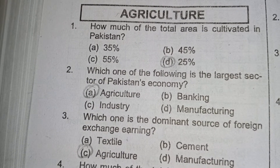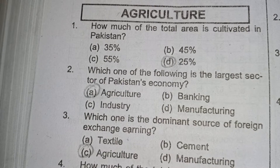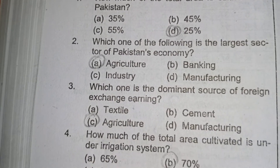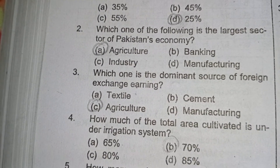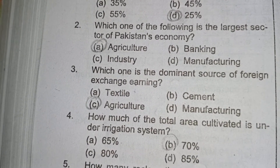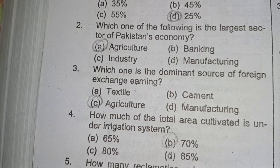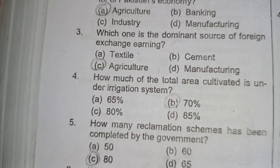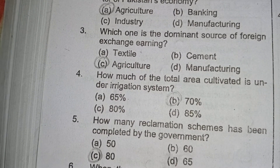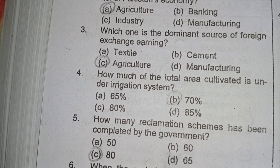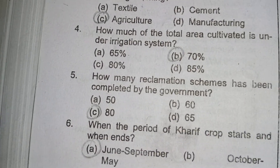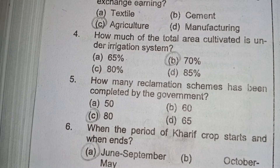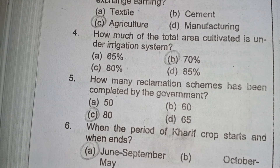The first MCQ: how much of the total area is cultivated in Pakistan? 25 percent is the right answer. The next question: which one of the following is the largest sector of Pakistan's economy? Agriculture is the answer. Third question: which is the dominant source of foreign exchange earning? Agriculture is the right answer.